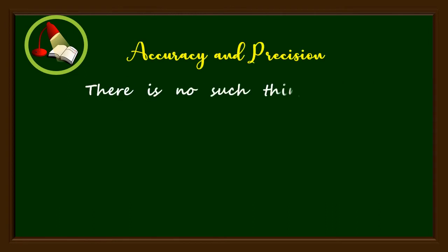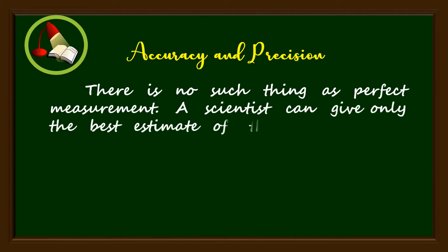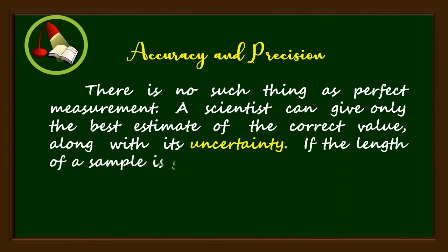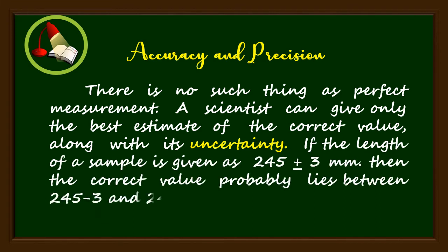There is no such thing as perfect measurement. A scientist can give only the best estimate of the correct value along with its uncertainty. If the length of a sample is given as 245 plus or minus 3 millimeters, then the correct value probably lies between 242 millimeters and 248 millimeters.